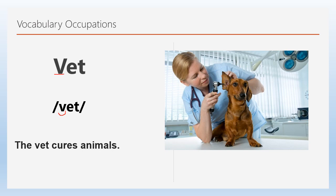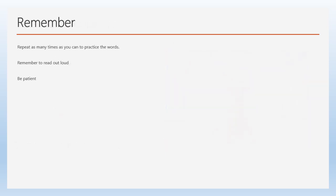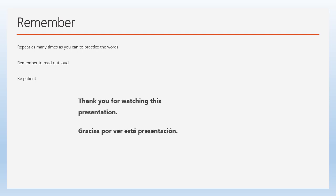That's all — those are the occupation words. Just to remember three things: repeat as many times as you can to practice the words; remember to read out loud so you can hear yourself and know how you're pronouncing them; and third, be patient — this is not something you learn overnight. Thank you for watching this presentation. That's all for today.